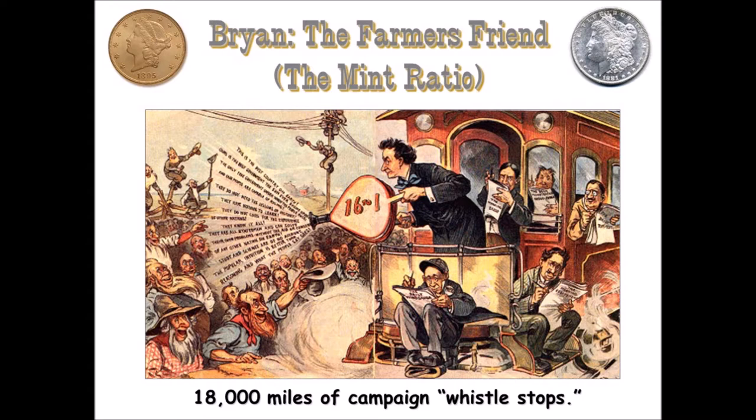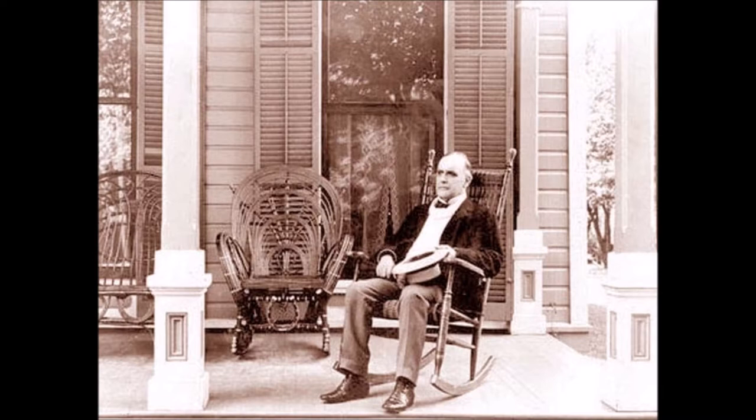Bryan gave his famous 'Cross of Gold' speech, declaring: 'You shall not press down upon the brow of labor this crown of thorns. You shall not crucify mankind upon a cross of gold.' He was painting biblical imagery to frame the bimetallism question as a matter of Christian values, arguing passionately for bimetallism. A cartoon from the period shows Bryan holding the crown of thorns while standing on the cross he would be crucified on.